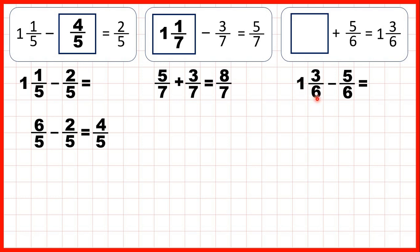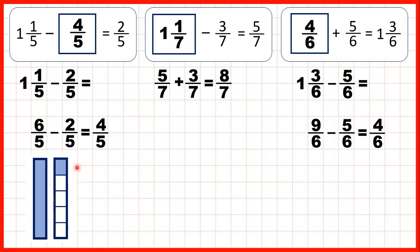One times six is six plus three is nine. So as an improper fraction, we have nine-sevenths because the denominator stays the same. So now we can subtract five-sevenths. The denominator is still six and nine minus five is four. So our missing number is four-sevenths, and we can show what we did here.